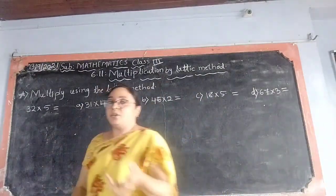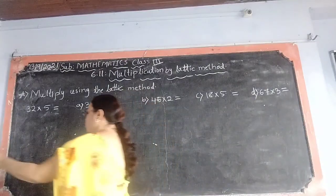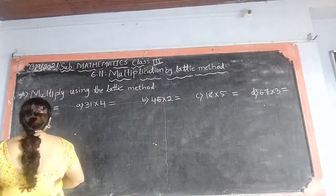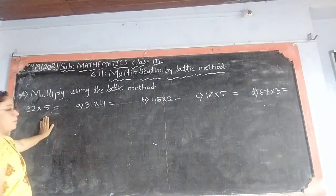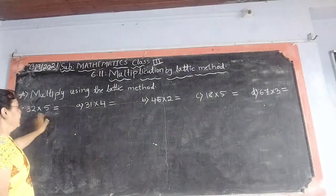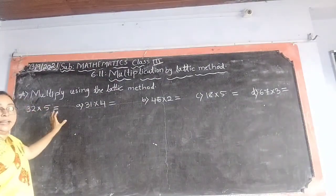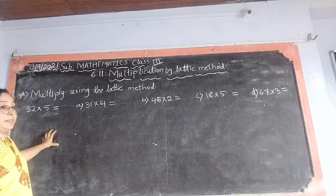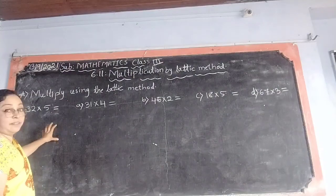Now, please pay your attention towards me so you will understand. Now, see here, 32 multiplied by 5. That we can do easily like that, but with the lattice method, we will do it using the lattice method.